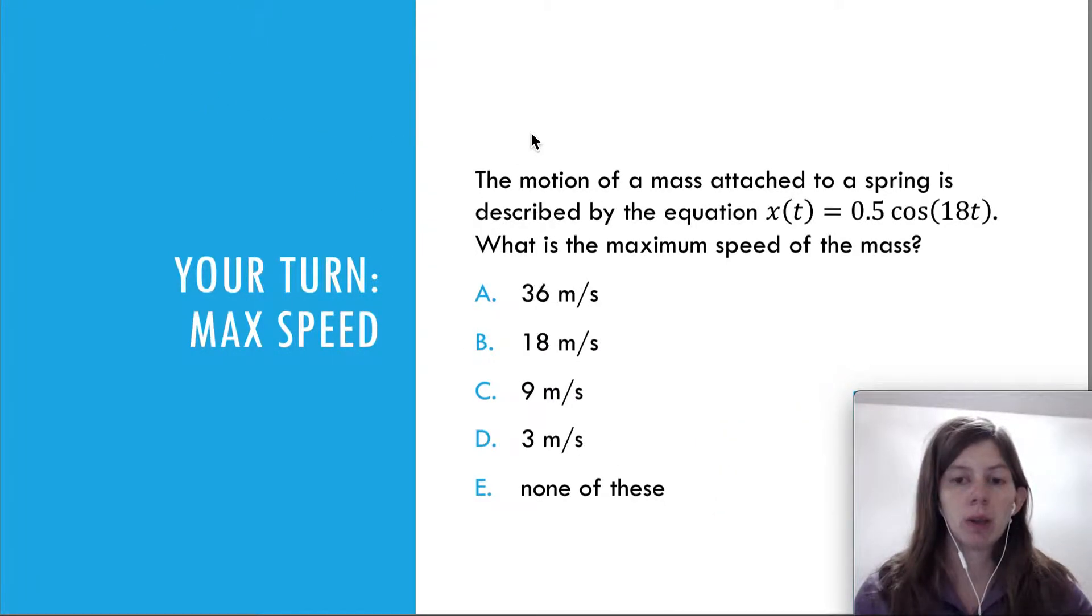Let's take a look at another question. The motion of a mass attached to a spring is described by this equation here. So this is a cosine wave. What is the maximum speed of the mass? So you look at this equation and you think, okay, well that means that my object is oscillating and it looks like this. The position is a function of time where 0.5, the number before that cosine function, is always that amplitude.